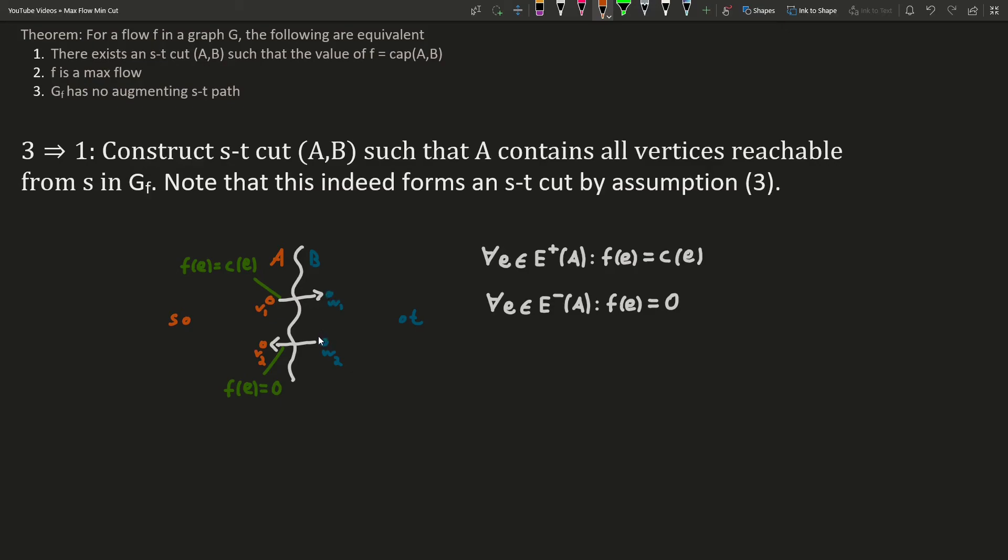For all edges going from B to A, the flow must be zero, because if it wasn't, then we would have a reverse edge in the residual graph with strictly positive residual capacity going back from V2 to W2. So again, W2 would be reachable from the source, and would therefore be in A, which it isn't.